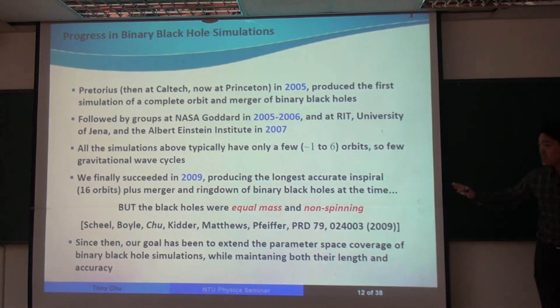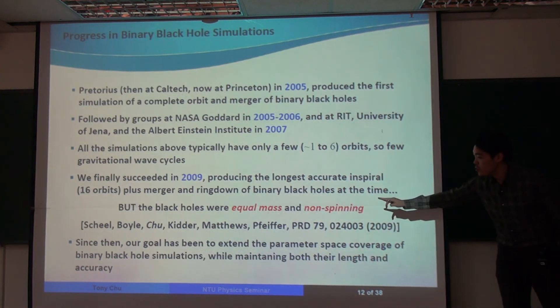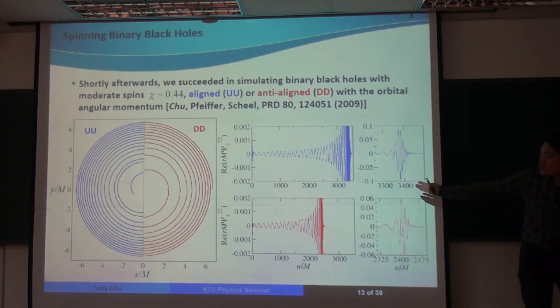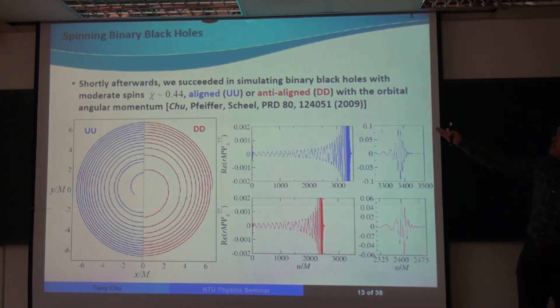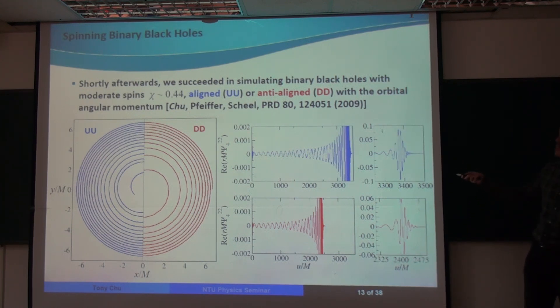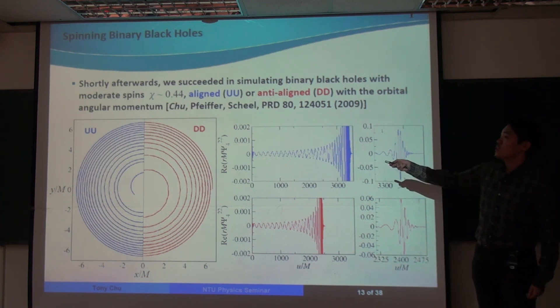So our first successful binary black hole simulation was for equal mass, non-spinning holes. And shortly after this work, I took the leap to extend simulations to spinning black holes. And in our first cases, the spins of black holes, I call the black hole spin chi.